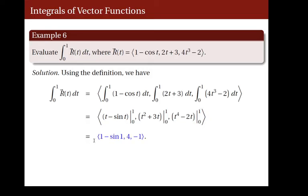And so, we obtain the vector whose components are 1 minus sine of 1, and 4 minus 1. So the integral of r from 0 to 1 is this vector here.